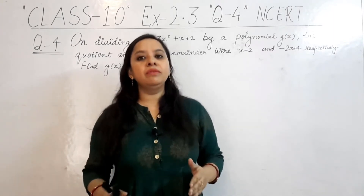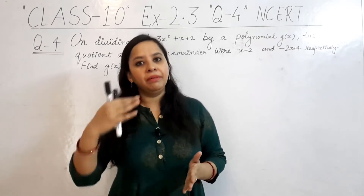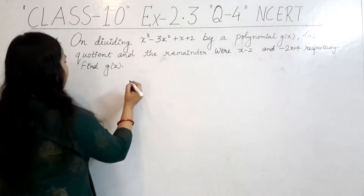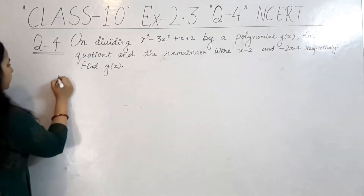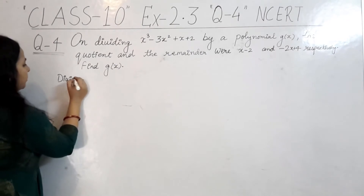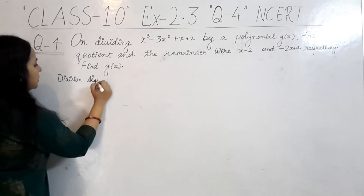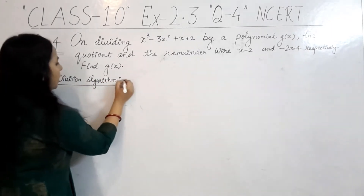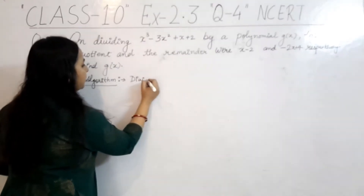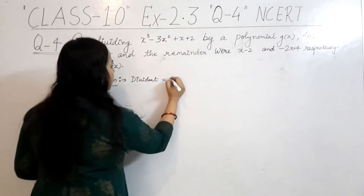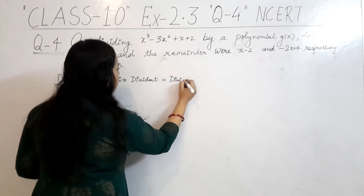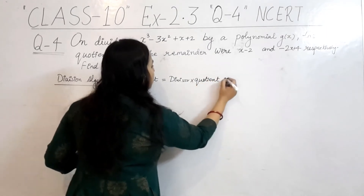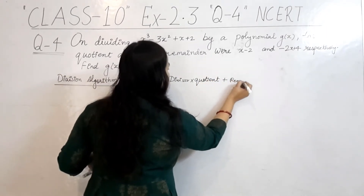You also know that these four terms come in the division algorithm. What is the division algorithm? Dividend is equal to divisor into quotient plus remainder. So first of all, let's write our division algorithm: dividend equals divisor into quotient plus remainder.